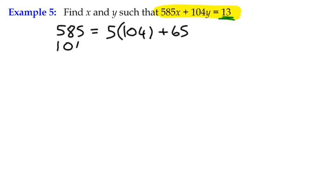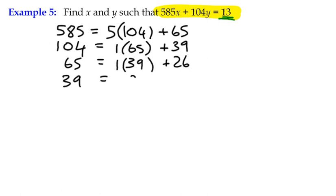Remainder's not 0, everything shuffles left, and we're going to get one lot of 65 and a remainder of 39. Shuffle everything left. 65 is only 1 lot of 39, plus a remainder of 26. 39, again, is 1 lot of 26 plus 13, which means that 26 is 2 lots of 13, plus 0.